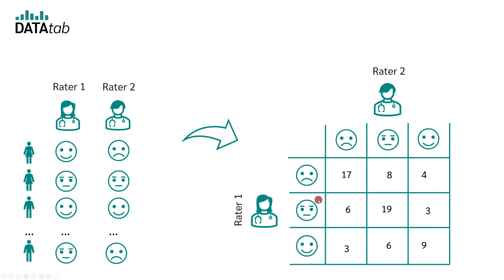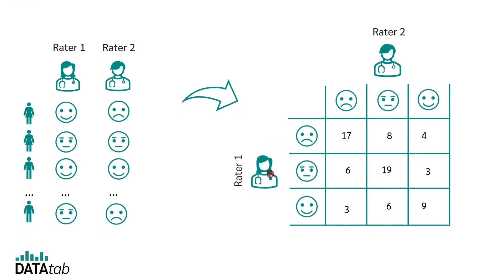Now let's count how many times each combination occurs. For example, 17 times both raters answered dissatisfied; eight times rater one answered dissatisfied and rater two answered neutral; four times rater one answered dissatisfied and rater two answered satisfied, and so on. For the ratings that lie on the diagonal, both raters agree.